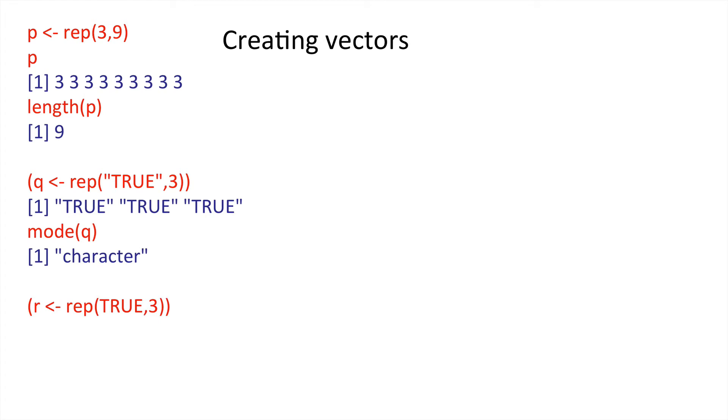But here we could say r is rep true, where we're not using inverted commas. And what we would get here printed out is true, true, true. But you'll notice that it's not in those quotes. The mode of r is a logical mode.